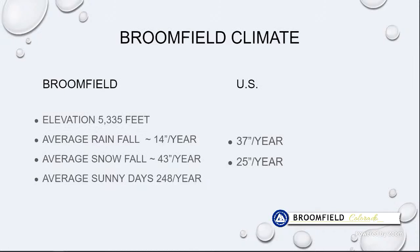First, let's have a little background. Broomfield — long story short — we know we're higher than your average, sunnier than your average, and drier than your average. Looking at average rainfall for the US: 37 inches a year. For Broomfield, we're less than half. We've got more sunny days than average, and more snowfall than the US average. We'll learn there are specific lawn issues that prolonged snow cover can contribute to.